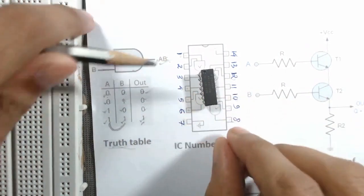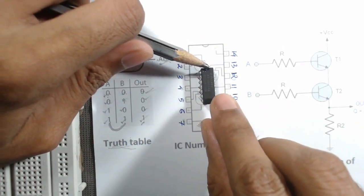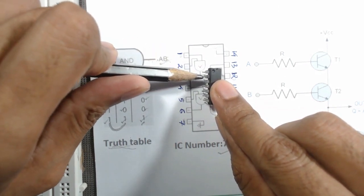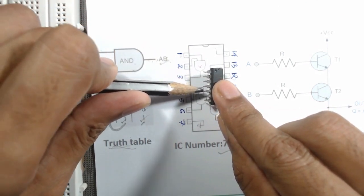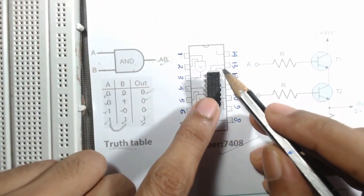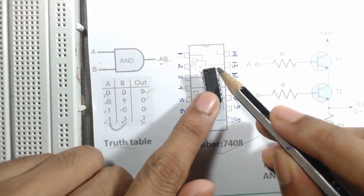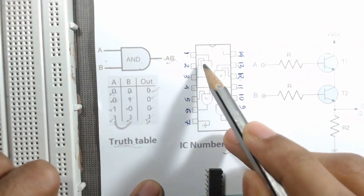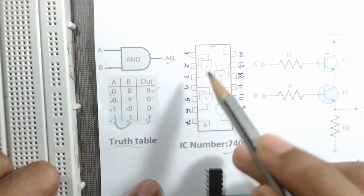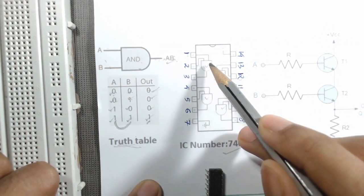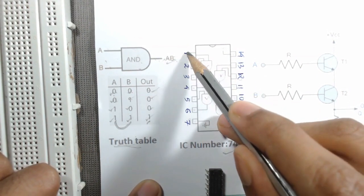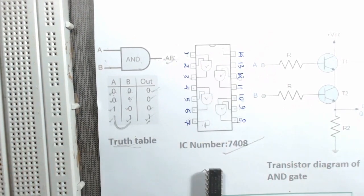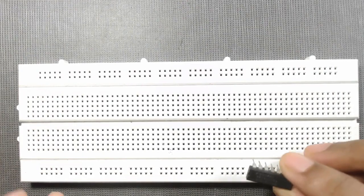When we keep the IC with the cut mark to the left side, we can see pin number 1, then 2, 3, 4, 5, 6, 7, 8, 9, 10, and so on, up to pin 14. From this IC diagram we can see that for the first AND gate, pin number 1 and 2 are the inputs and pin 3 is the output.